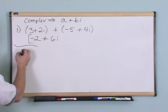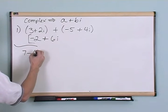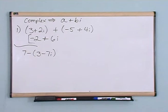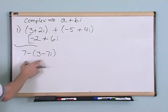Let's say we have 7 minus 3 minus 7i. So this is just a number 7. And this is a complex number, 3 minus 7i.